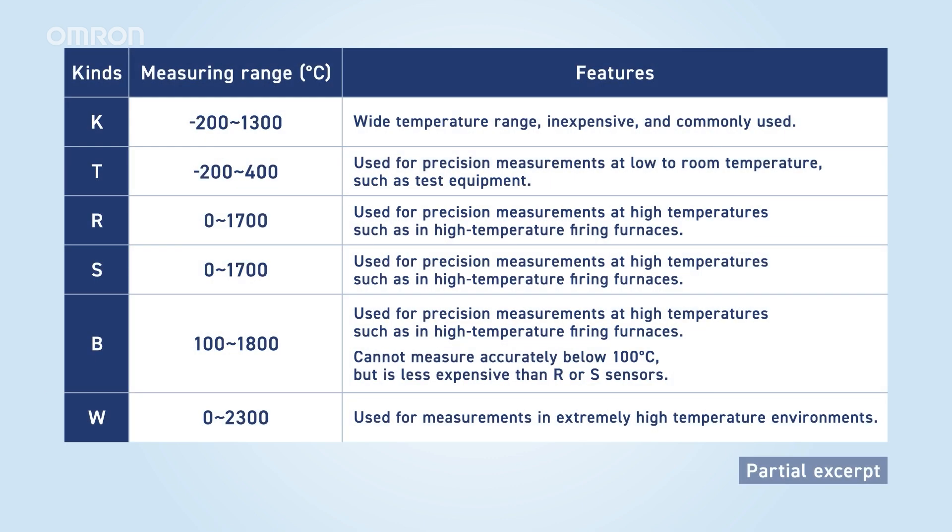Thermocouples vary by material and are chosen based on measurement range, accuracy, and environment. K-type thermocouples are popular for their wide range and low cost. T-type thermocouples are used for precise low-temperature measurements, while R, S, and B types are for high temperatures. W-type thermocouples are used for extremely high temperatures, around 2,000 degrees Celsius. Click here for the details about our temperature sensor.